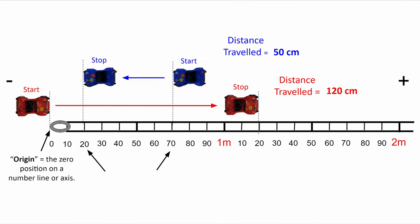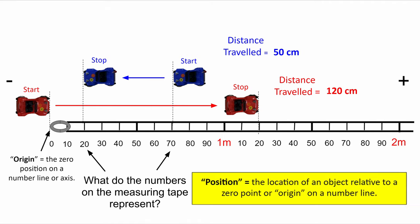While discussing how distance can be measured using a meter stick or metric measuring tape, ask students what the number on the measuring device represent. Do they represent the distance traveled or something else? Through discussing a couple of examples, it should be clear that the meter stick is measuring the position of the object, the location of the car relative to some zero point or origin on a number line. Position is what is being directly measured using the measuring tape or meter stick, not distance travel.